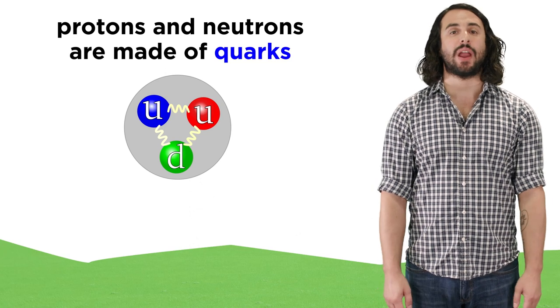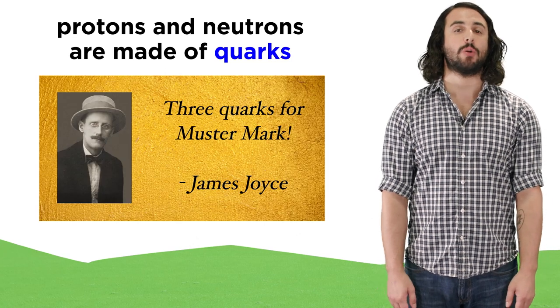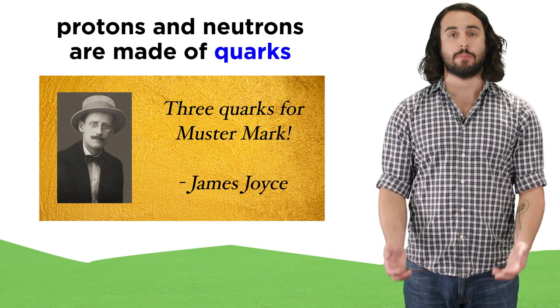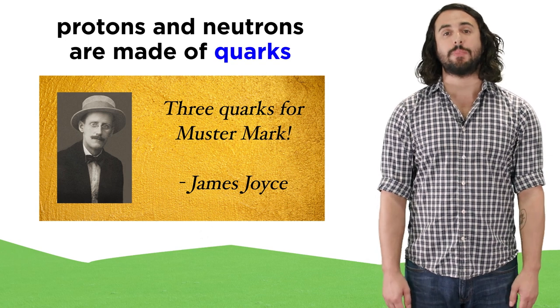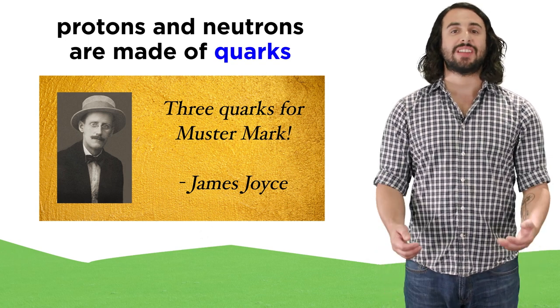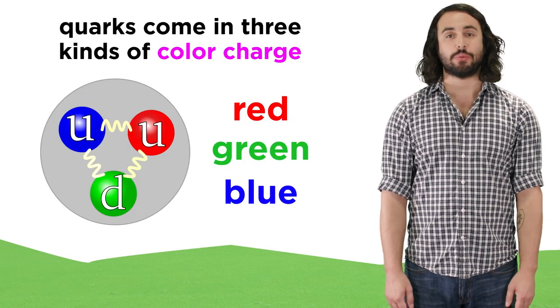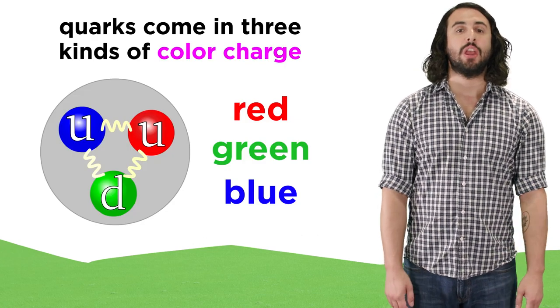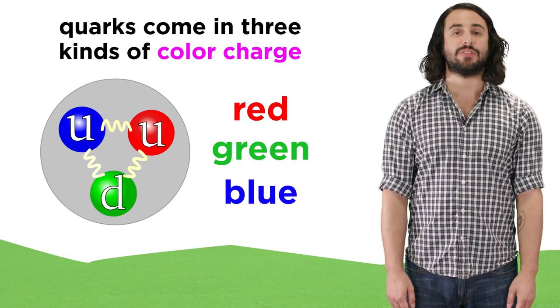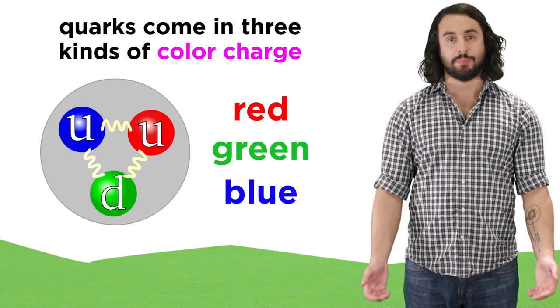The name quark comes from the writings of James Joyce, who spoke of three quarks for Muster Mark. As quarks typically come in groups of three, the title seemed apropos. These quarks also come in three kinds of color charge, which refers to the three kinds of color perceived by humans: red, green, and blue.